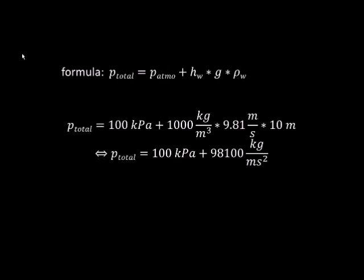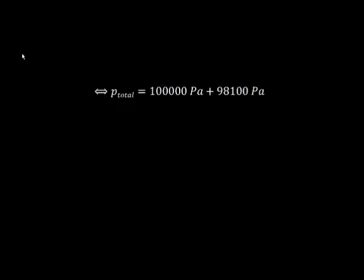As 1 kg per meter times square second is equal to 1 Pa, 98100 kg per meter times square second are equal to 98100 Pa. Finally, we receive a total pressure of 198100 Pa.